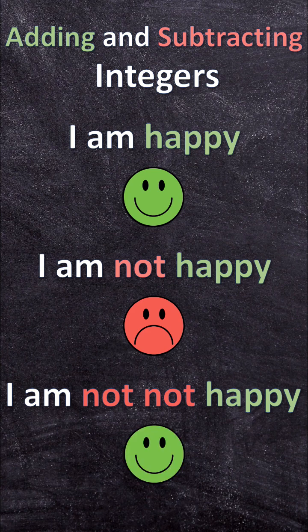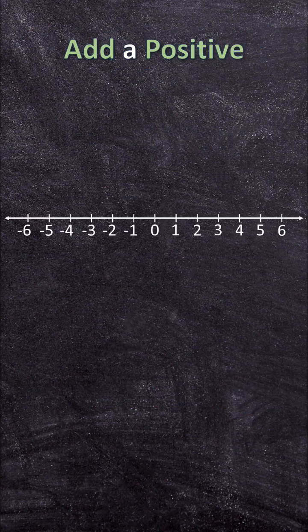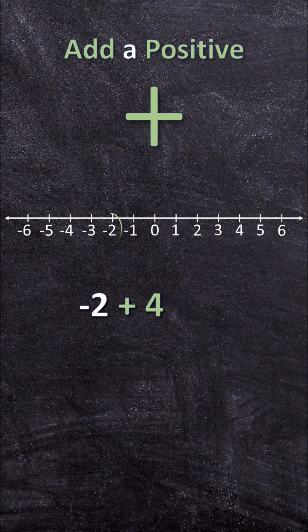So let's implement this. When we add a positive, for example negative 2 plus positive 4, we start at negative 2, we add 4, and we end with 2.